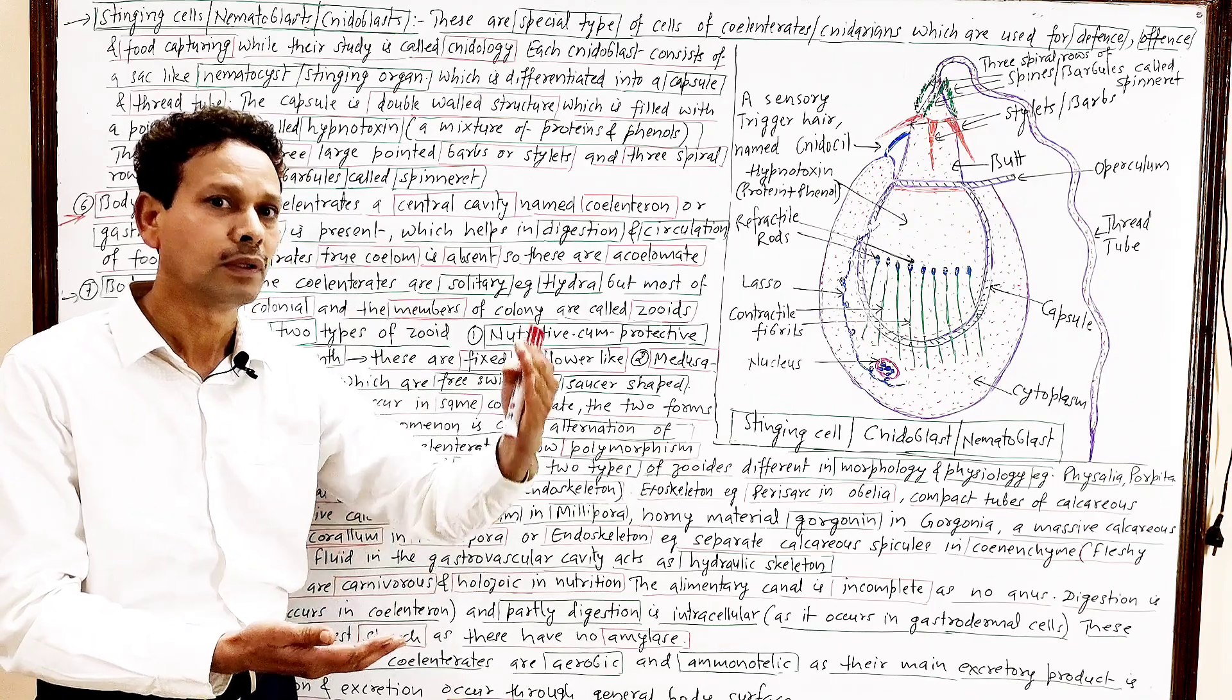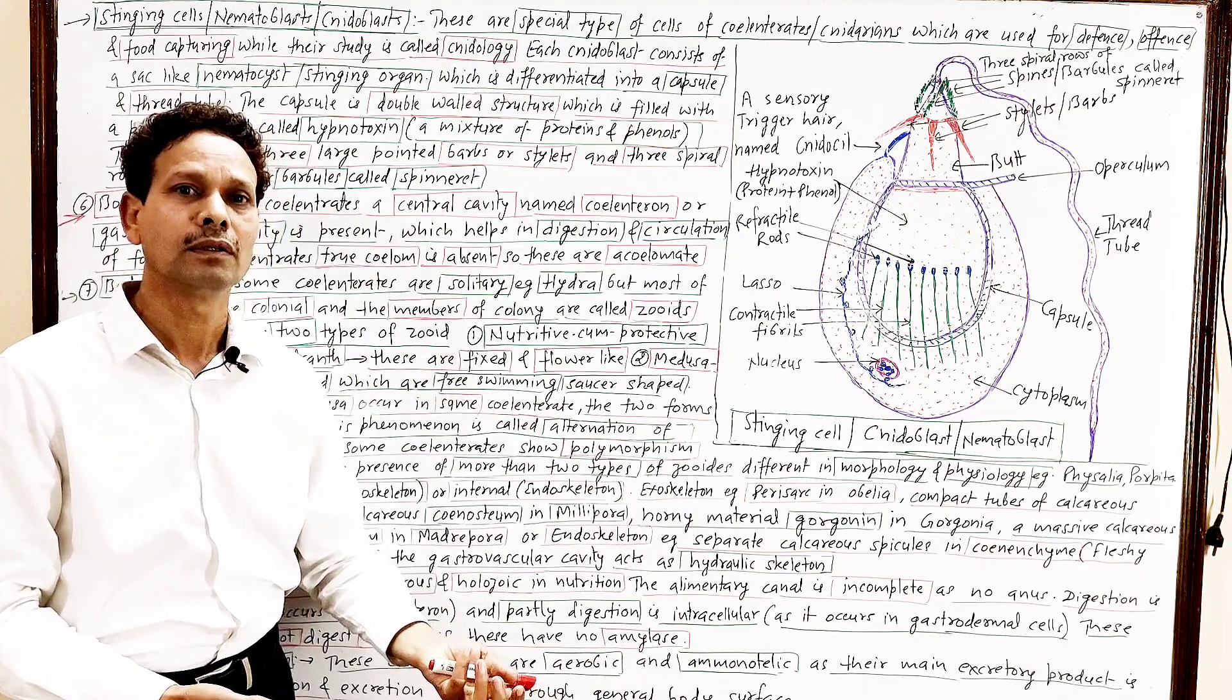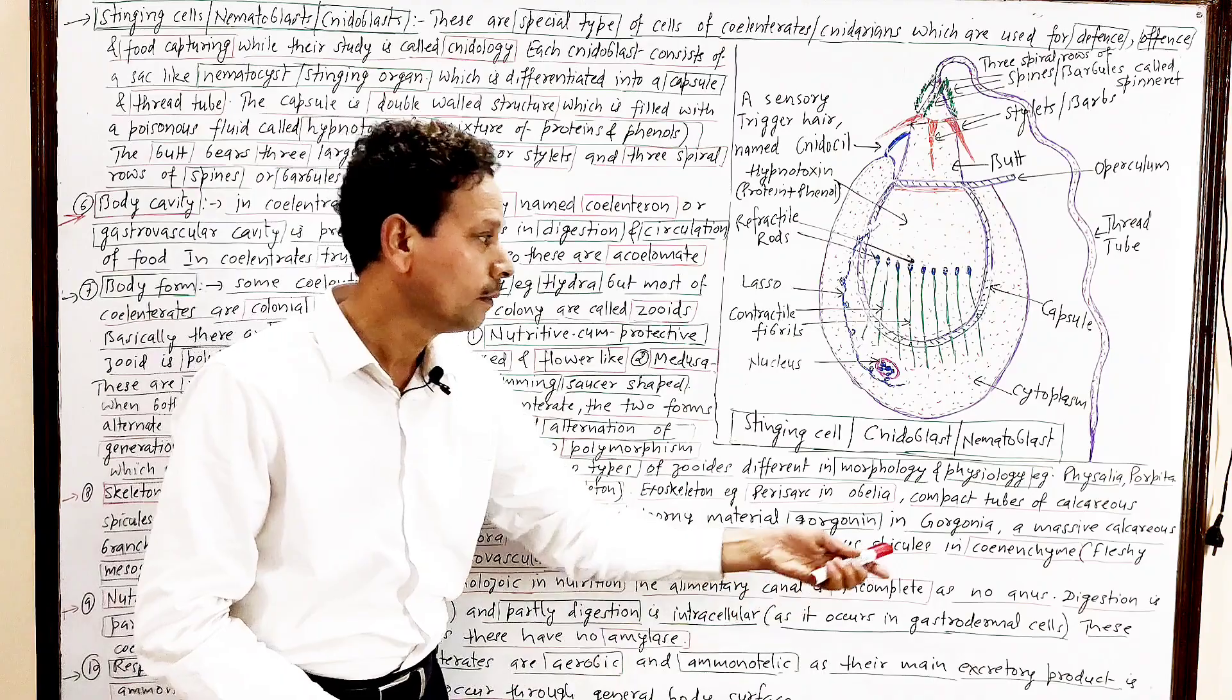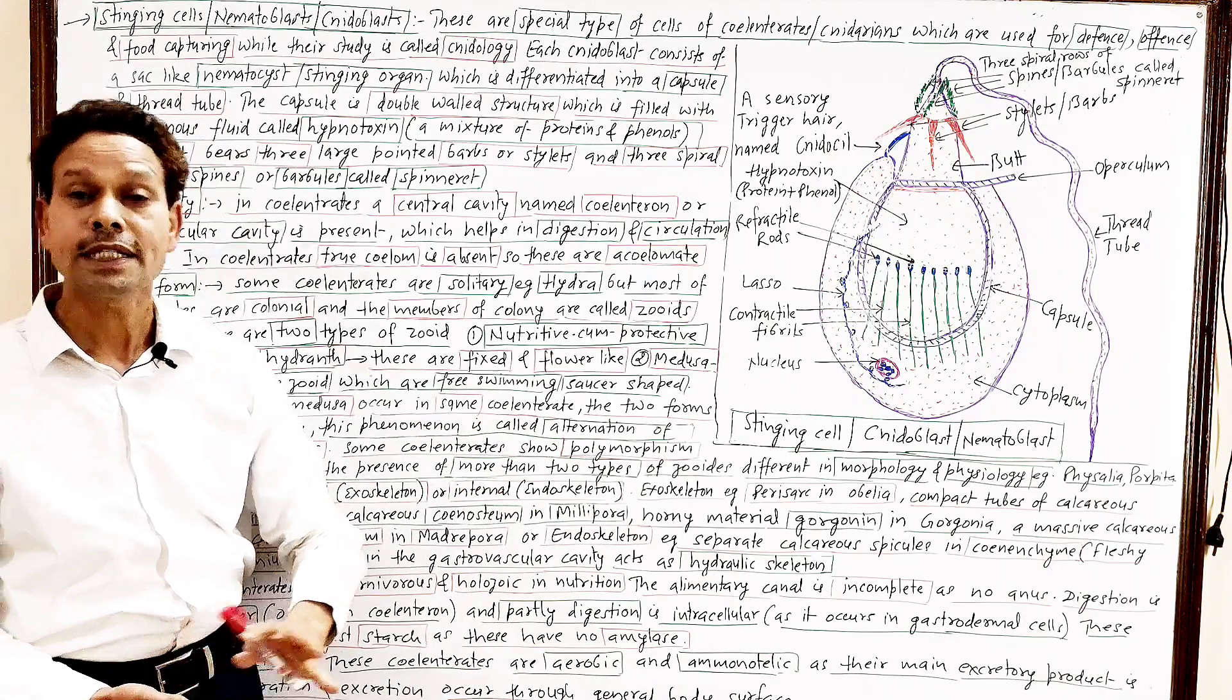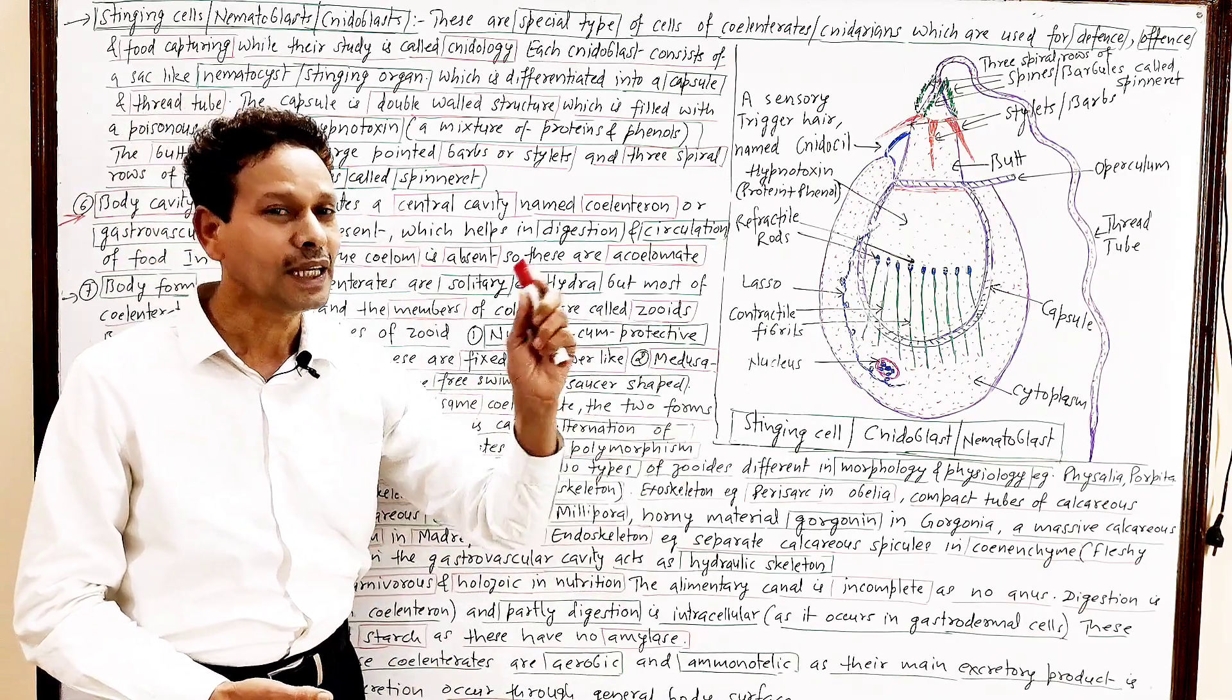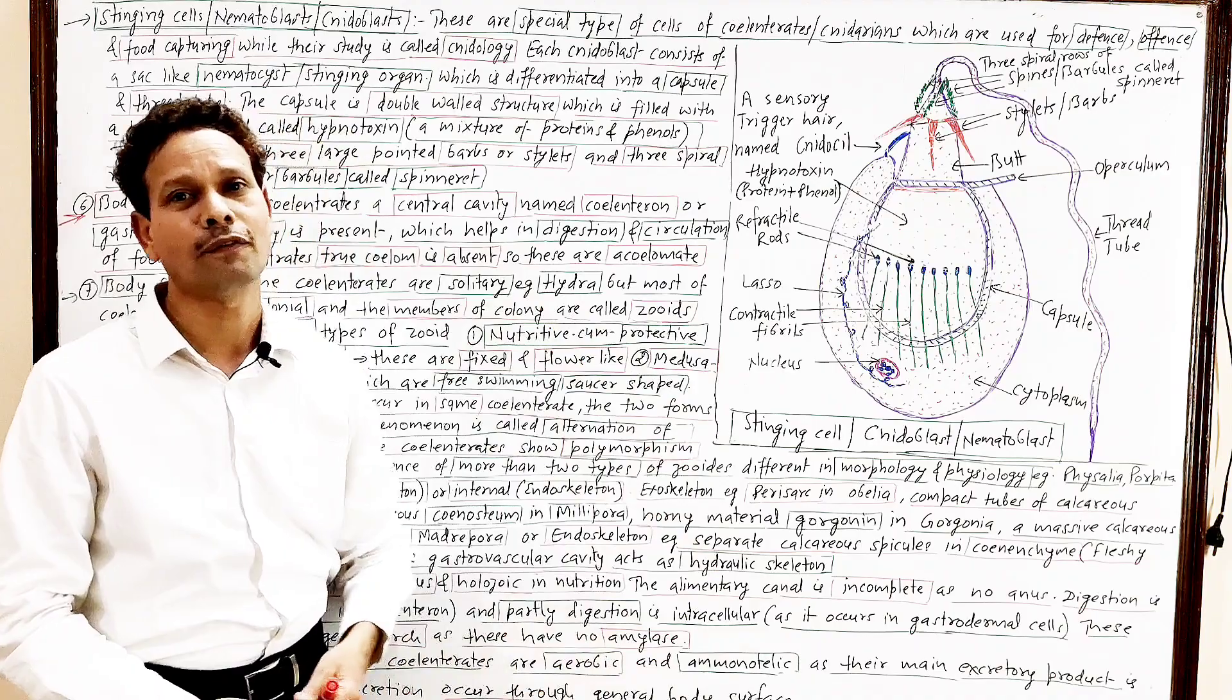Polyp, blastostyle, and medusa. So these are trimorphic. But in some cases, in some coelenterates, like Physalia, like Porpita, like Velella, several forms are there. So these coelenterates having a characteristic feature, they show polymorphic feature. Means having more than two forms.